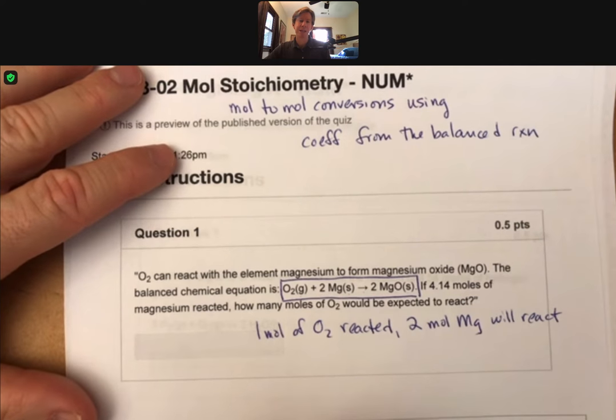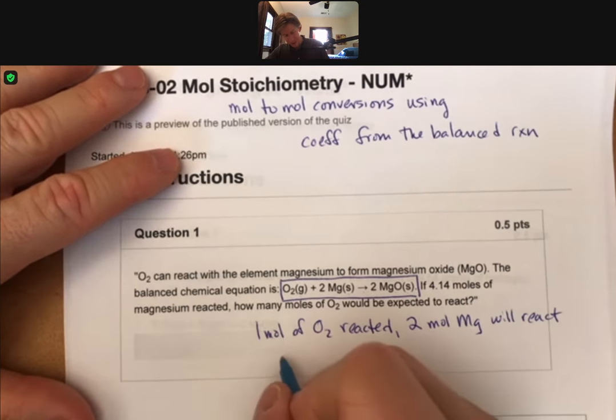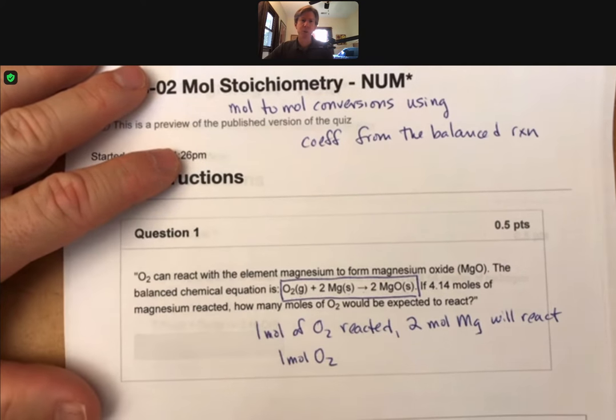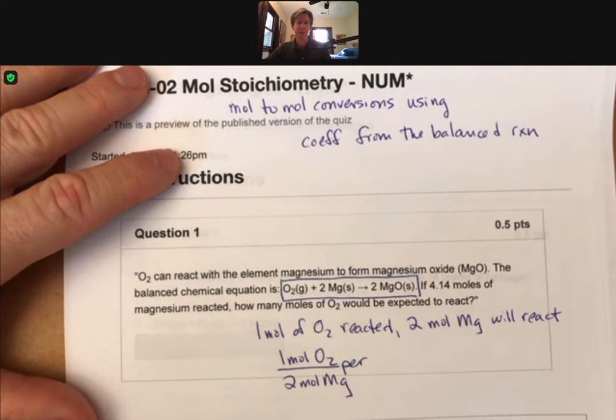We translate that into a mole-to-mole conversion or a conversion factor by saying one mole O2 reacted, which we don't write, per two moles Mg reacted.